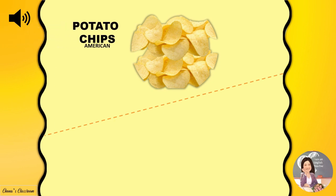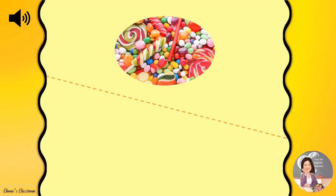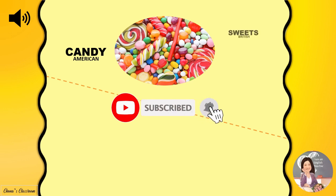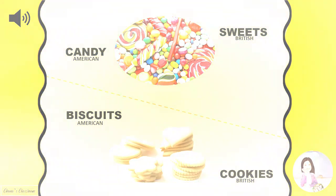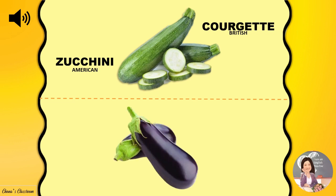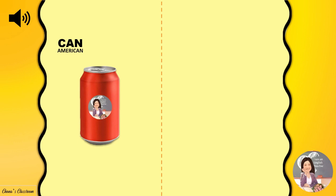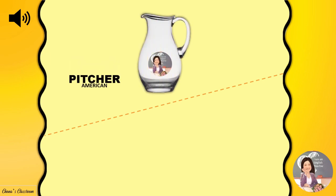Potato chips / Crisps. French fries / Chips. Candy / Sweets. Biscuits / Cookies. Zucchini / Courgette. Eggplant / Aubergine. Can / Tin. Takeout / Takeaway. Pitcher / Jug.